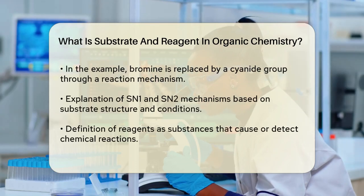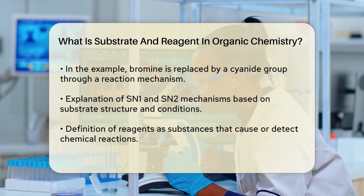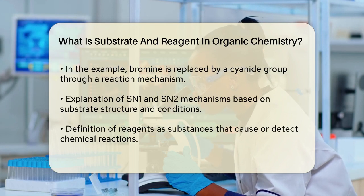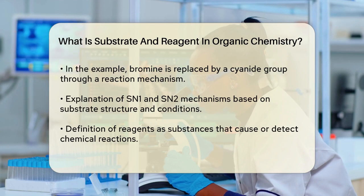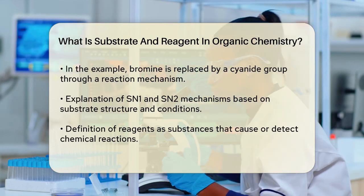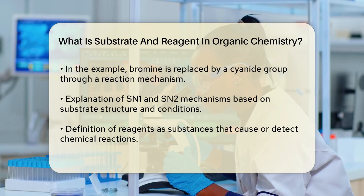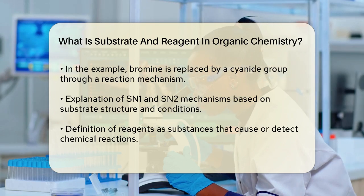Now, let's consider a specific scenario. If you have a molecule like 2-bromopropin-1-ol and it undergoes a substitution reaction with sodium cyanide (NaCN), the 2-bromopropin-1-ol acts as the substrate. The bromine in this molecule is replaced by the cyanide group, resulting in a new product.